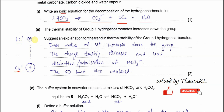Caesium has more electron shells so it is larger. Therefore the distortion is less — the polarizing power of caesium is not as strong as lithium. Decomposition of the carbonate salt depends on the polarizing power of the cation. When the cation is smaller with the same charge, the charge density of lithium is much greater, so it can distort the hydrogen carbonate ion and weaken the bonding.